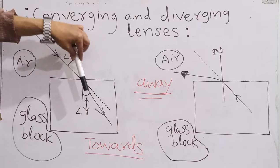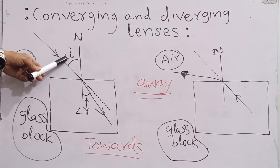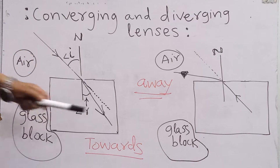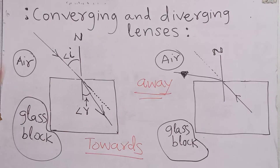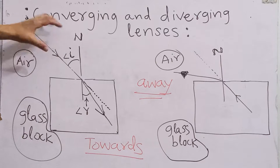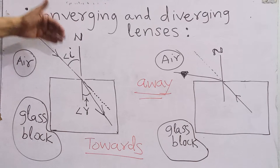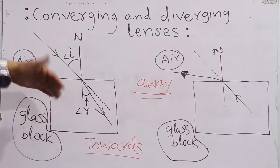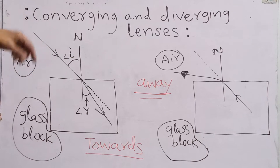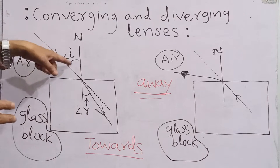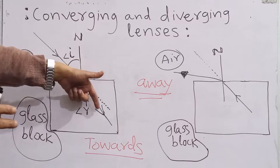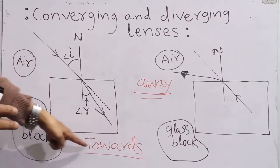This bending of light is called refraction of light. This is the angle of incidence, shown as I, and this is the angle of refraction, shown as R. Hence we conclude that when light enters from an optically less dense medium — air has less density so it is called the less dense medium, and glass has higher density so it is the optically more dense medium — when light travels from an optically less dense medium into an optically more dense medium, it bends and comes close to the normal, meaning it bends towards the normal.